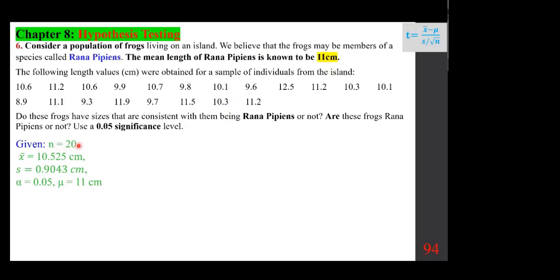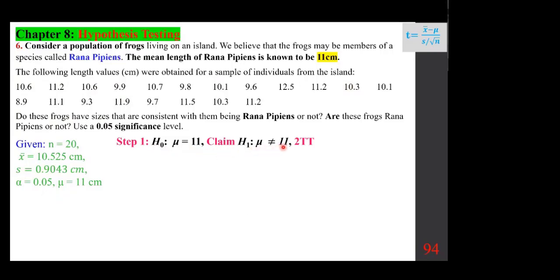We need to calculate N, x-bar (summation of X over N), and S (square root of summation of (X minus x-bar)² over N − 1) from the data. Alpha is 0.05 and mu is 11 cm. H₀: mu = 11 (this is the claim). H₁: mu ≠ 11 — a two-tailed test. If we accept H₀, the frogs are Rana PPNs; otherwise, they are not.